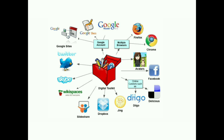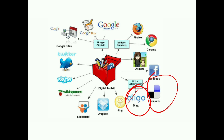The next one is Diigo, also known as the Deco app. Many of you have heard about this. It is a social bookmarking and annotation tool that allows individuals and groups to highlight content and add comments to websites. Any annotated items can then be uploaded and organized in an outlining document.